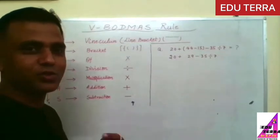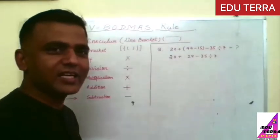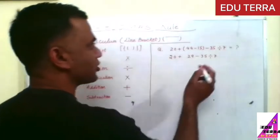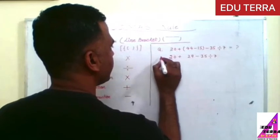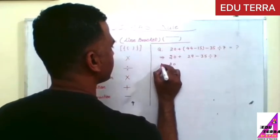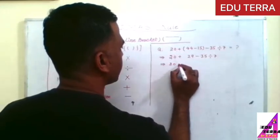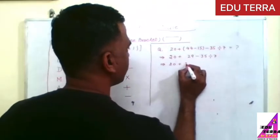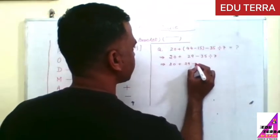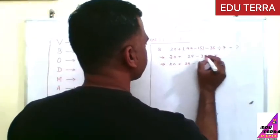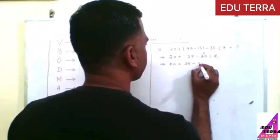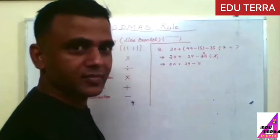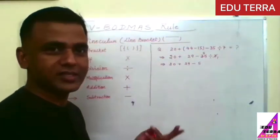So bracket is over, vinaculum is over. After that, O means of, and of is not given in this question, so next is division. Division, so it means where division sign is given. So see here, it will be 20 plus 29 minus, 35 divided by 7 is 5. So it is coming 5. The table of 7 is very simple.